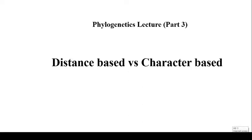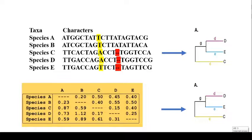We will go a bit deeper into different types of methods in phylogenetics. There are two main types of methods: one are the distance-based methods and the others are the character-based methods. As the name indicates, there is a difference between the distance-based method and character-based method.